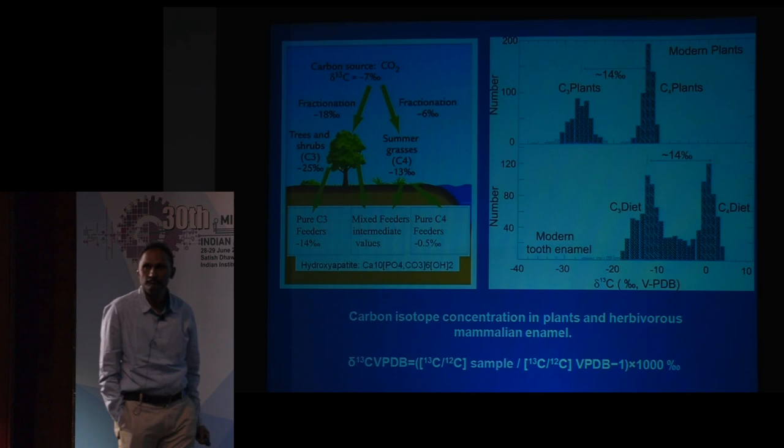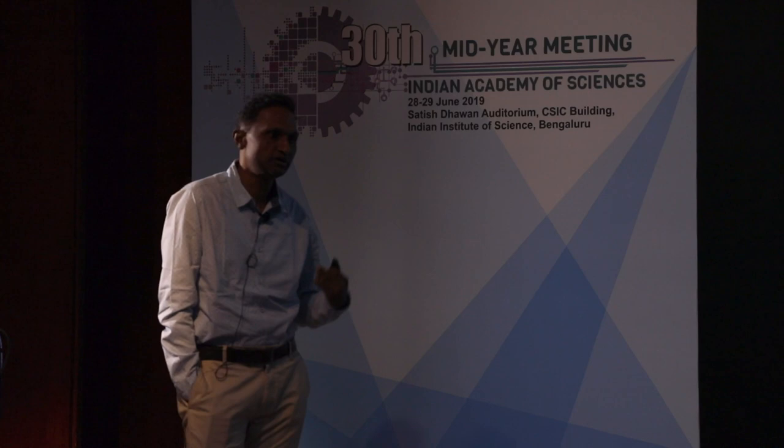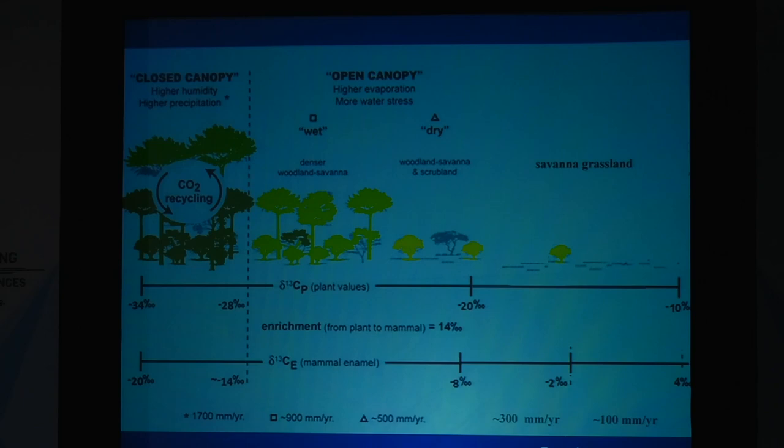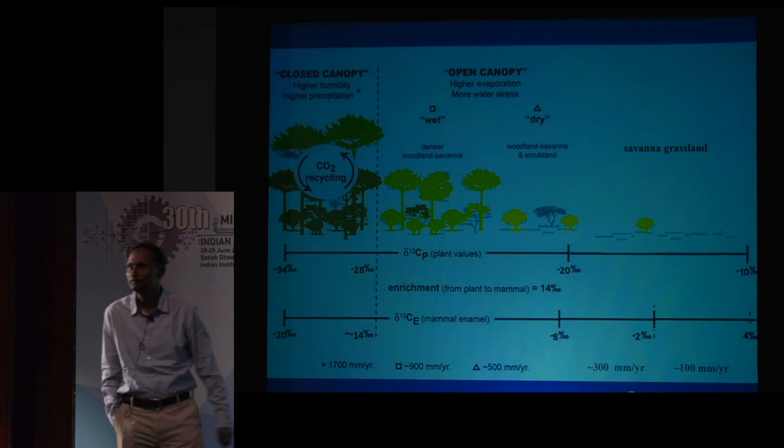We get enriched values in enamel but they can be very well differentiated. If enamel is analyzed with a mass spectrometer, one can distinguish between a C4 diet and a C3 diet. In a closed canopy system values are more negative, and in an open canopy system they become more positive, and this is reflected in the enamel of mammals.